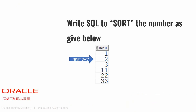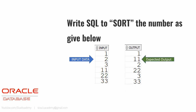First let me explain what the question is about, then we will see how to resolve this using SQL. We are provided with a table of one column which is of number data type, and this table contains numbers like 1, 2, 3, 11, 22, 33. The expectation is to write a query which sorts the numbers such that we get 1, 11, followed by 2, 22, and followed by 3, 33. All the numbers starting with 1 should come first, followed by all numbers starting with 2, and then 3. Within each group the numbers should be sorted accordingly — it should come 1 then 11, not 11 then 1.